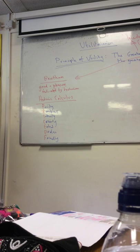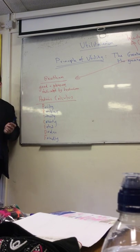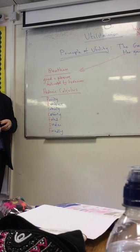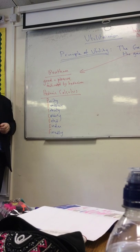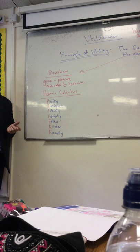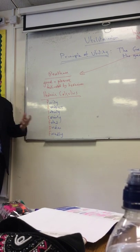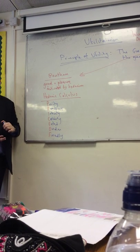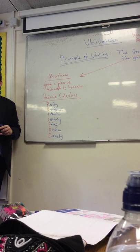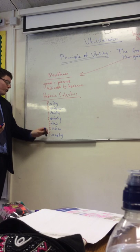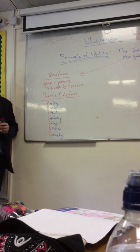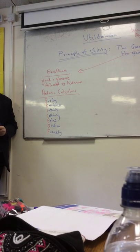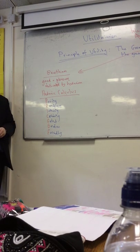The acronym is PRICE F: Purity — how pure is the pleasure or pain, i.e. is it 100% pleasurable or is pain mixed in? Remoteness — how near or far away is that pleasure or pain? Intensity — how strong is it? Certainty — how definite is it? Extent — how many people are involved, linking back to the greatest number. Duration — how long it lasts. Frequency — the spreadability, meaning how much it impacts others beyond yourself.